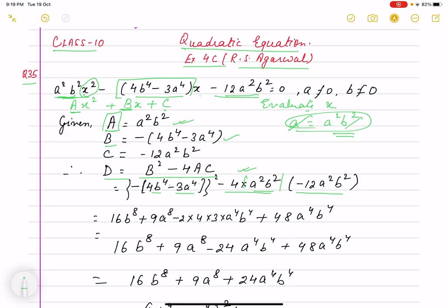Simplifying, the minus squared becomes positive. Using the (a - b)² identity, we get a² - 2ab + b².